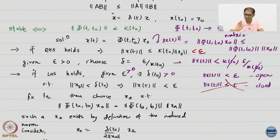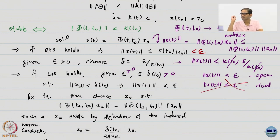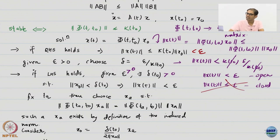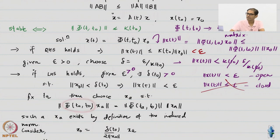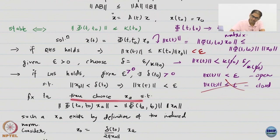This expression is nothing special — it is not the solution at time TA or T0 or anything like that. It is just the product of the state transition matrix times some vector XA. What is exactly happening here? The first thing I did is I fixed a time TA so that this matrix now becomes a constant matrix. Then I make a claim: I can choose an XA such that the norm of phi times XA equals the norm of phi times the norm of XA.